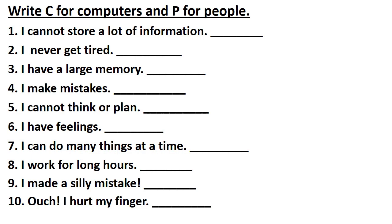Next worksheet: Write C for computers and P for people. First question: I cannot store a lot of information. This one is true for people, so kids need to write P. Question number 2: I never get tired. Here they need to write C, that is computers. Question number 3: I have a large memory. Answer is C. Fourth question: I make mistakes. Answer is P.